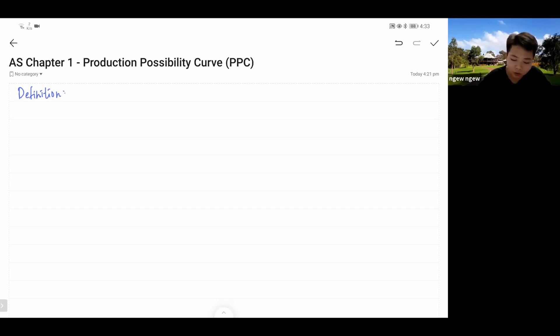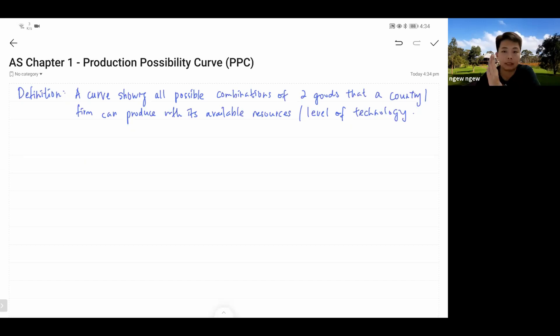Basically, PPC is a curve showing all the possible combinations of two goods that a country or a firm can produce with its available resources or level of technology. You can replace available resources and level of technology with the term factor endowment.